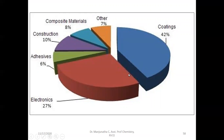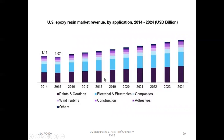A pie chart shows epoxy resin usage across sectors: electronics 27%, construction 6%, composite materials, and coatings. The maximum usage is in coatings, paints, and pigments. A graphical representation of the epoxy resin market from 2014 to 2024 shows that consumption and demand have always been increasing, representing the growing importance of this material.